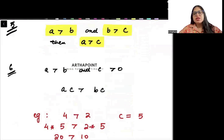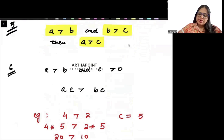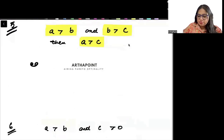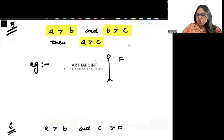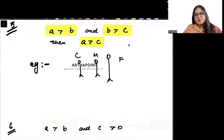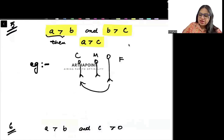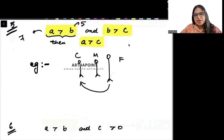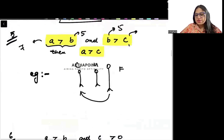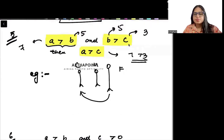Next rule: if A is greater than B and B is greater than C, then A is greater than C. For example, your father's height is more than your mother's height, and mother's height is more than the child's height, so father's height is more than the child's height. Numerically: A is 7, B is 5, C is 3 — so A is greater than C: 7 is greater than 3.